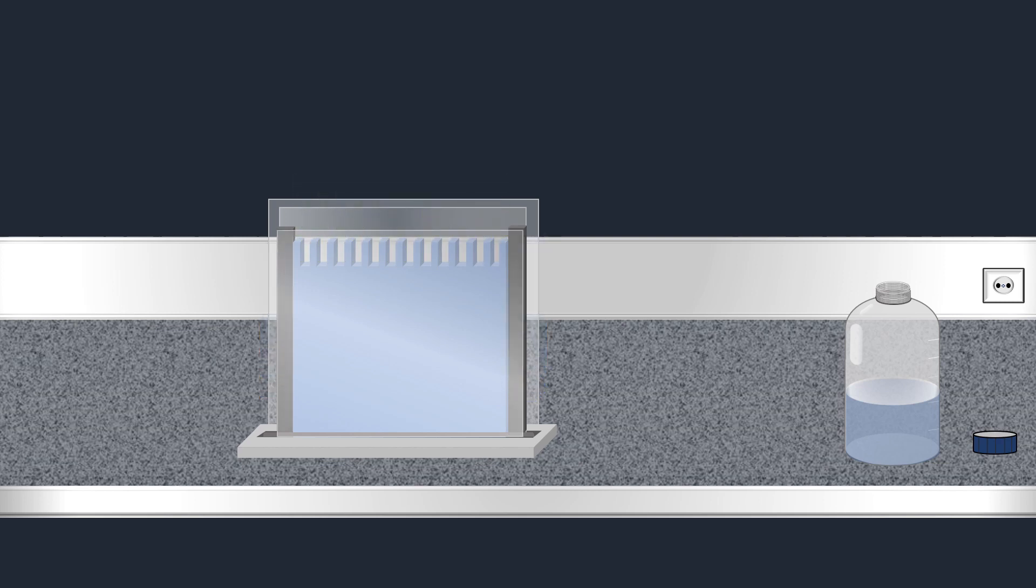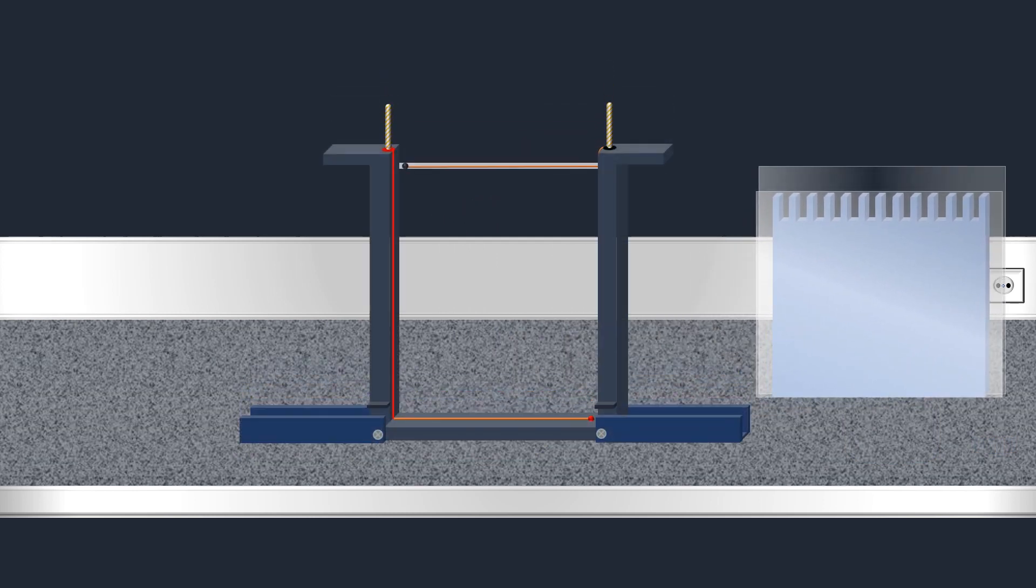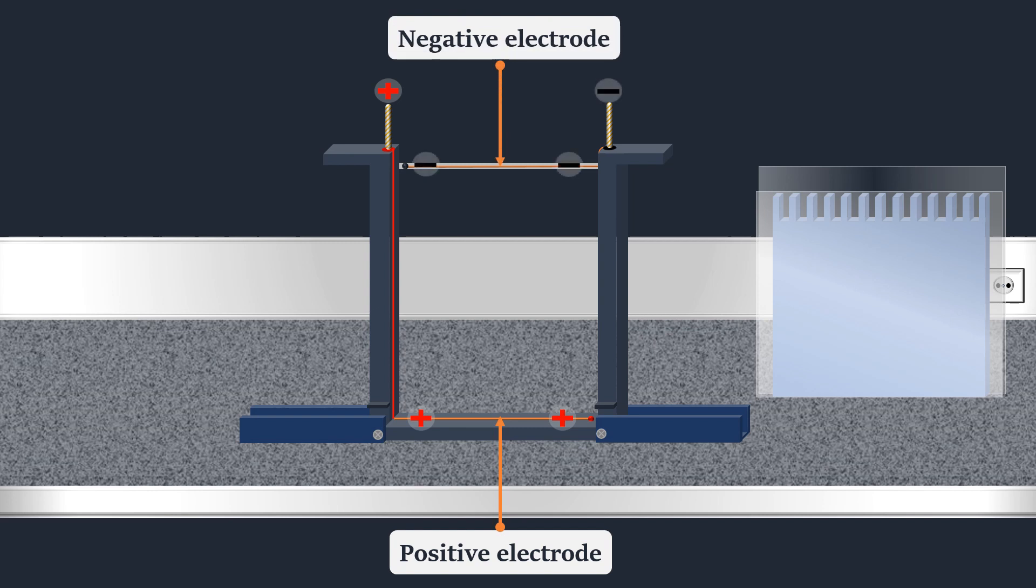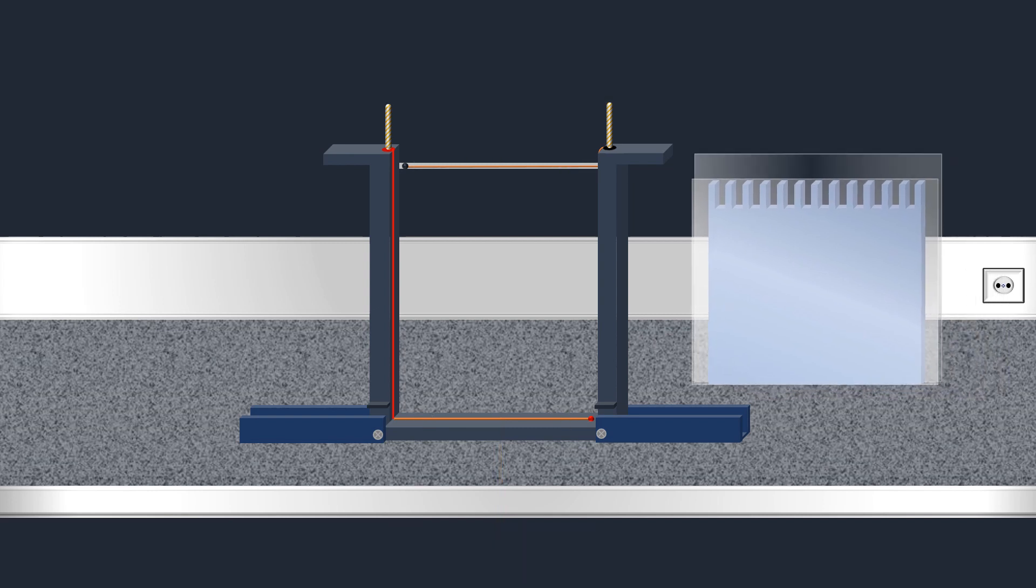Once the gel completely polymerizes, the comb is removed and the gel cassette is placed vertically between two electrodes. The positive electrode is located at the bottom of the gel, whereas the negative electrode is positioned at the top of the gel.